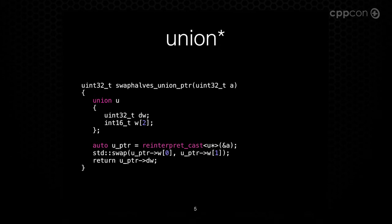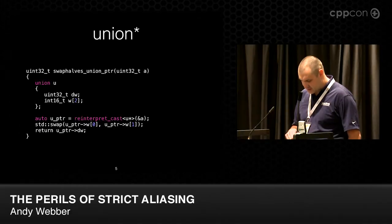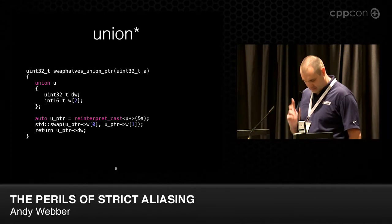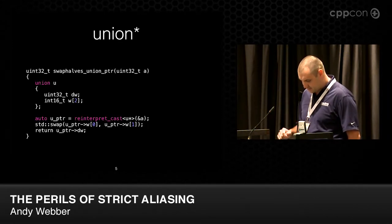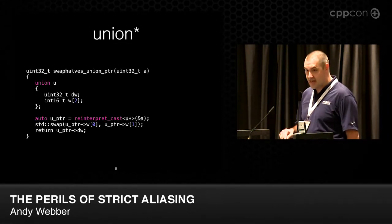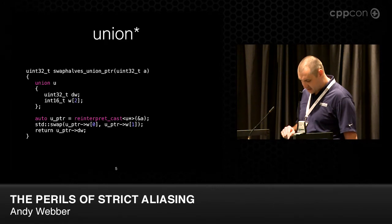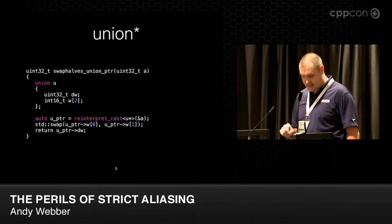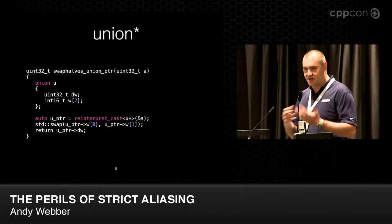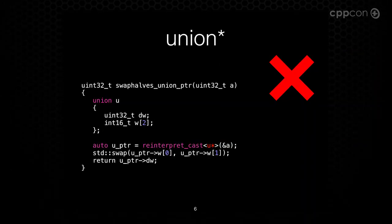Some people try to get clever. You might have heard that you can use a union to do this. So let's take a union of uint32 and uint16 with a size-2 array. We reinterpret_cast our 32-bit value to a pointer to that union and do it through the union. That should work, right? No.